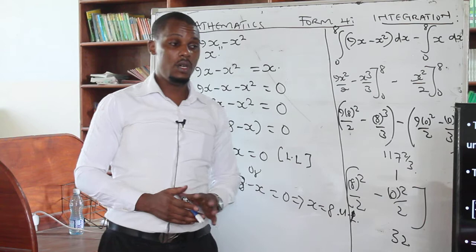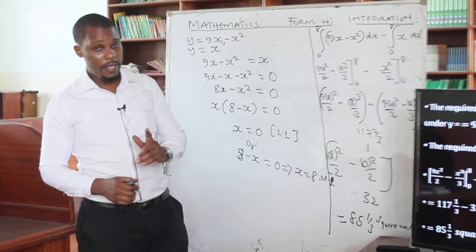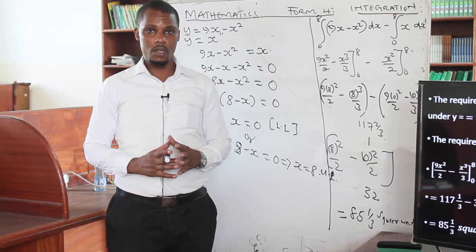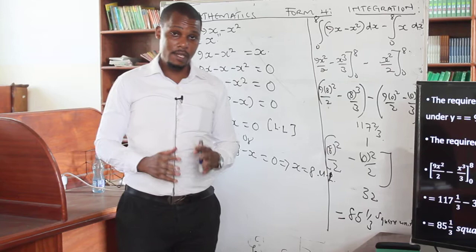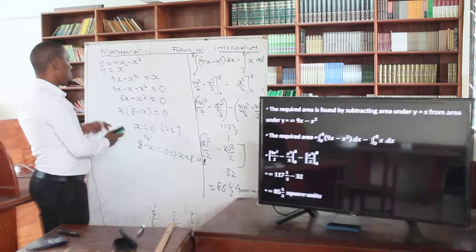That is the technique. When you have a question of that nature where you have not been given the limits, it is straightforward to find the limits. And once you find the limits, you know how to proceed by getting the subtraction of the two areas — under the straight line and under the curve — to come up with the area of the shaded region.